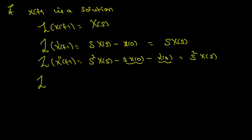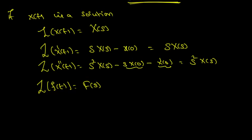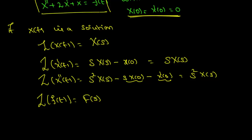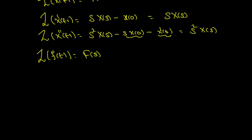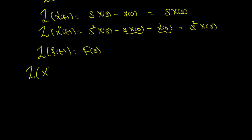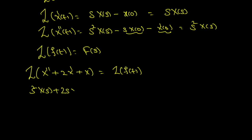Now if the Laplace of f of t is capital F of s, we are given the differential equation x double prime plus 2x prime plus x equals f of t. Applying the Laplace transform on both sides, we must have s squared X of s plus 2s times X of s plus X of s equals F of s.